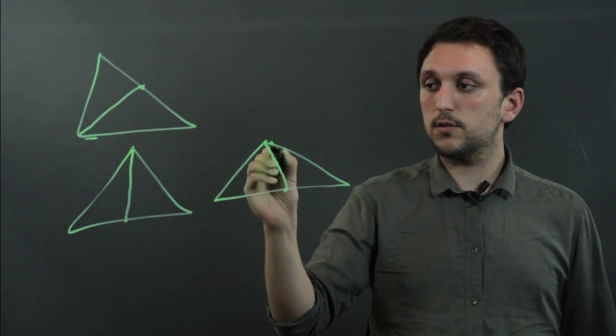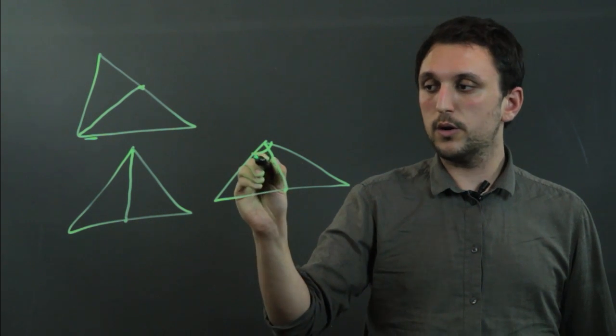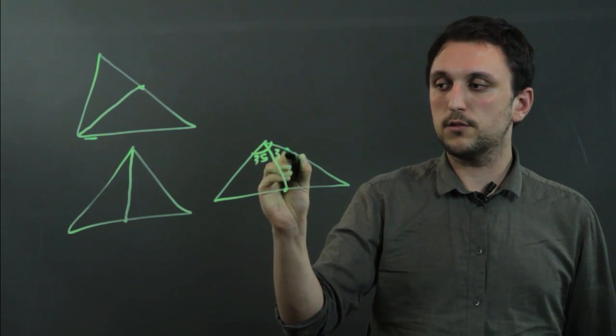So for example, if this angle was originally 70, we would now want this to be 35, and this to be 35.